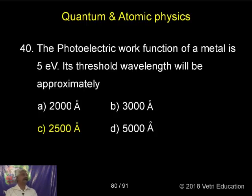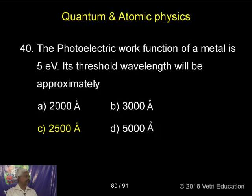The photoelectric work function of a metal is 5 electron volt. Work function means hν₀. Its threshold wavelength will be?